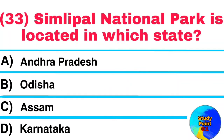Question No. 33. Simlipal National Park is located in which state? Answer: Orissa.